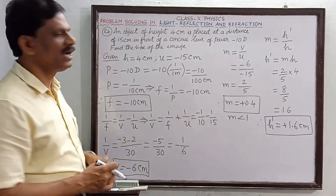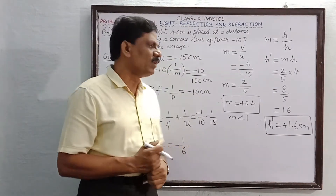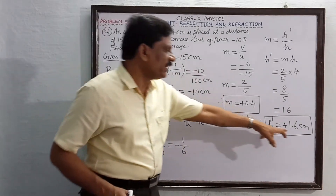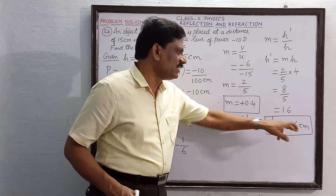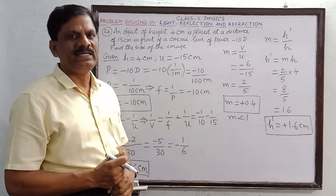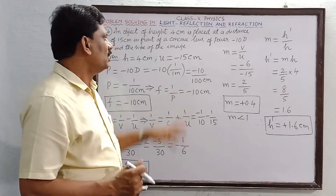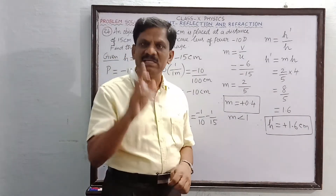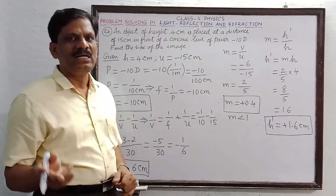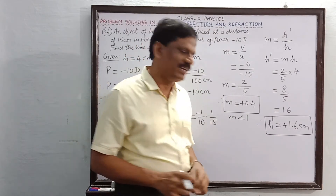Since h-dash is positive, the image is formed above the principal axis. So the image is virtual, erect, and diminished. Take care whenever you convert diopter into meter as well as diopter into centimeter.